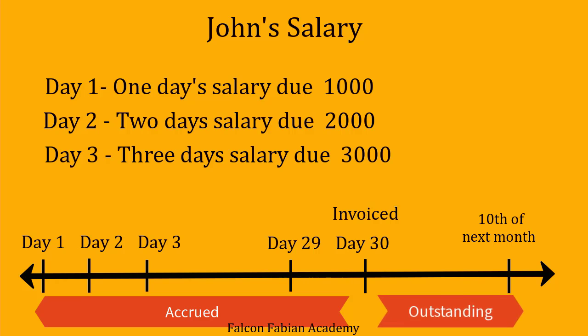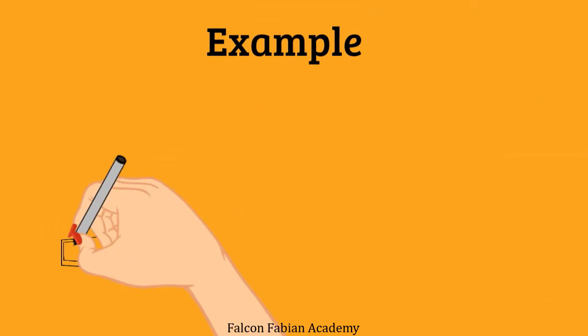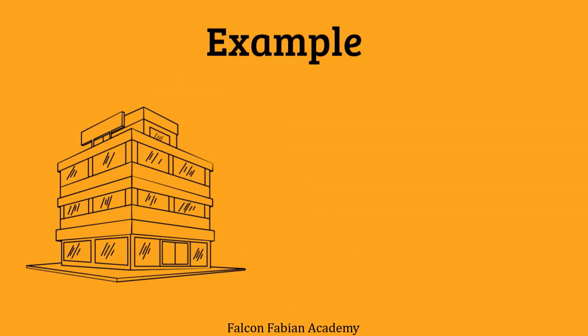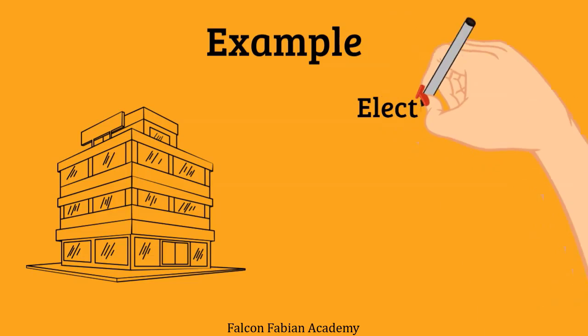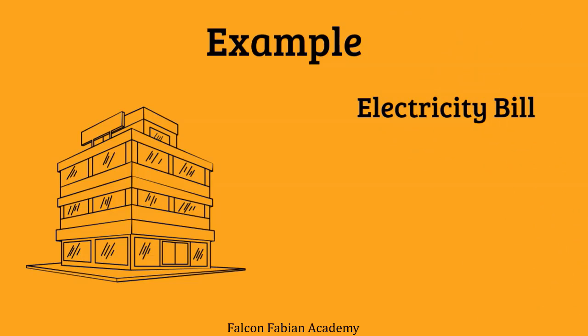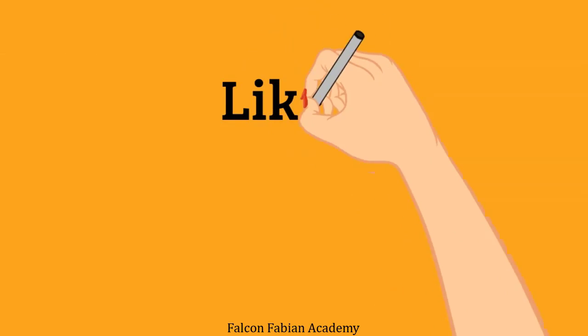More examples of accrued expense include the electricity bill. You consume electricity on a daily basis, so the expense is incurred daily, but payment happens at the end of a period, say 30 days. The electricity consumption till the date the bill is not generated remains an accrued expense. The moment an invoice is generated and there is a lag between the invoice date and the payment date, for that duration it is termed an outstanding expense.